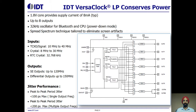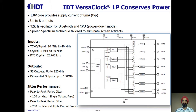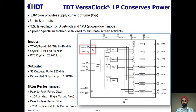Now I'll talk about the VersaClock low-power family of devices. VersaClock low-power devices are programmable clock generators intended for low-power battery-operated consumer applications. There are four internal PLLs, each individually programmable, allowing for up to eight different output frequencies, generated from a single reference clock.